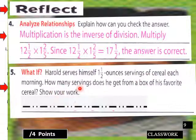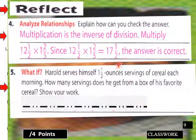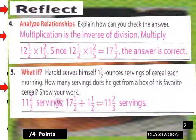What if Harold serves himself one and one-half ounce servings each morning instead? How many servings does he get from the box? You have seventeen and one-half divided by one and one-half — thirty-five halves divided by three halves. Multiply thirty-five halves by two-thirds; your answer should be eleven and two-thirds. Check it on the board.